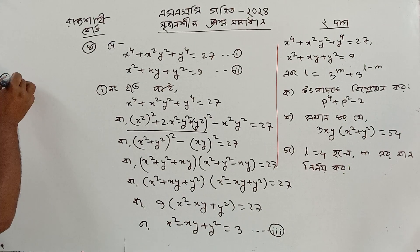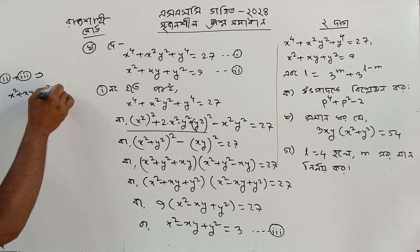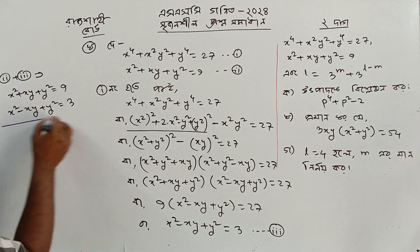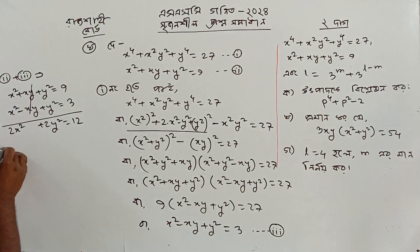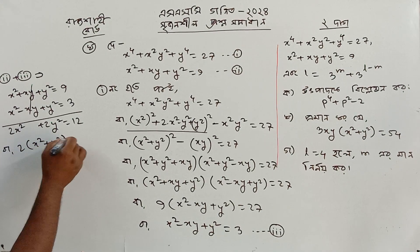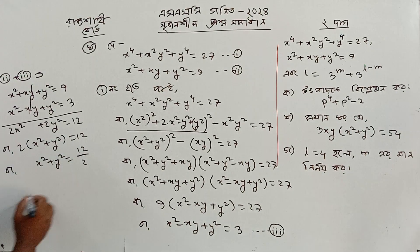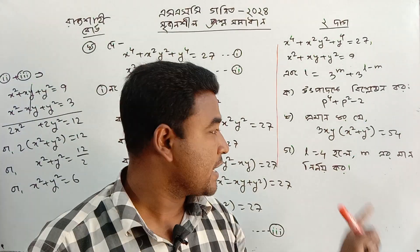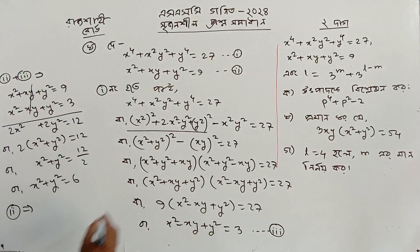So x² minus xy plus y² equals 3. Adding the two equations, x² plus xy plus y² equal to 9 and x² minus xy plus y² equal to 3, we write 2x² plus 2y² equal to 12, so x² plus y² equal to 6. Then 6 plus xy equals 9, giving xy equal to 3.